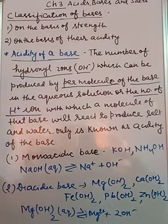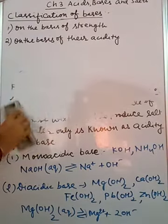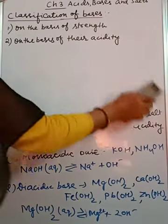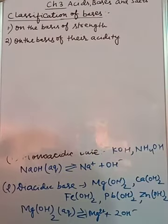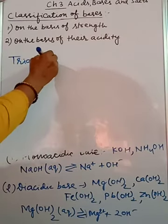Now the third category is triacidic. Again clear from the name, tri means three. Three hydroxyl ions. They are known as triacidic base.